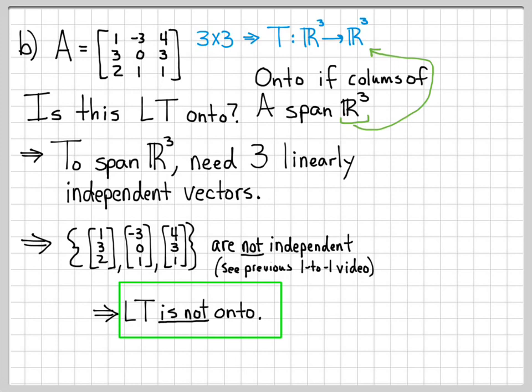To summarize: a linear transformation is onto if every point in the output space can be reached. To check this, you verify whether the columns span that space, which is equivalent to checking if the vectors are linearly independent. This is done by constructing the homogeneous system and determining whether only the trivial solution exists or if a free variable produces non-trivial solutions.